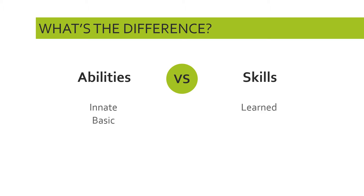Secondly, abilities are basic — they have very few components and are simple. Whereas skills, generally speaking, tend to be much more complex. Skills can be thought of as complex because they have multiple components; there are different parts to a skill, whereas an ability is a singular thing. We'll give some examples that make sense of this as we go through.